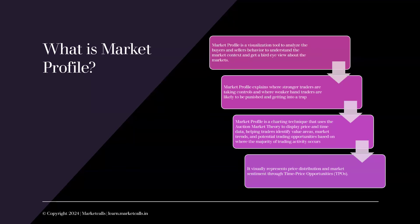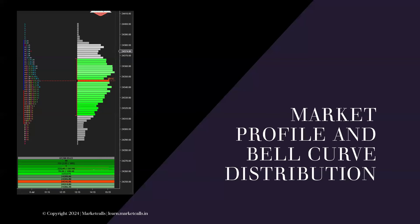Market profile is usually visualized in the form of TPOs — Time, Price, and Opportunity. It gives a 360-degree overview in terms of price, time, and opportunity, which is essentially volume. In a single picture, it shows multiple dimensions of information: price, time, and volume. Every day you see something called price distribution — a bell curve shaped structure. This is how a single day's structure looks; every day we get a different structure.